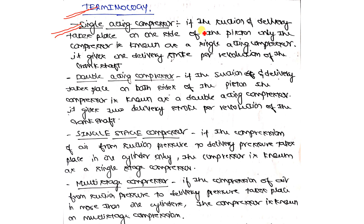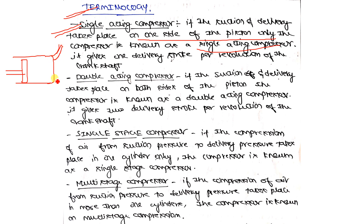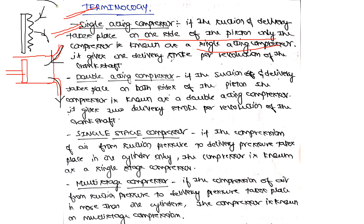First, what is a single acting compressor? If the suction and delivery takes place on only one side of the piston, the compressor is known as a single acting compressor. So if there is a piston and cylinder arrangement where the inlet port is on one side and the outlet port is on the same side, your intake stroke and outtake stroke are both on a single side of the piston — this arrangement is known as a single acting compressor.